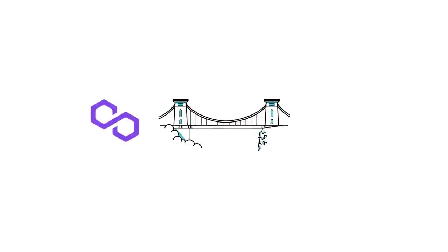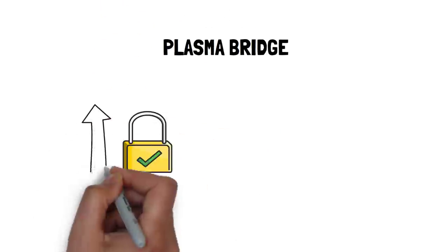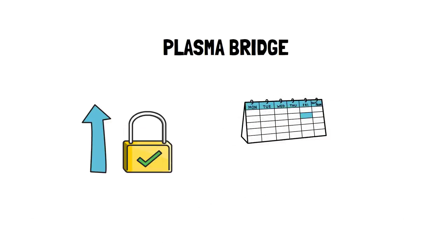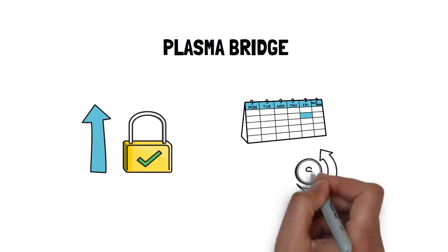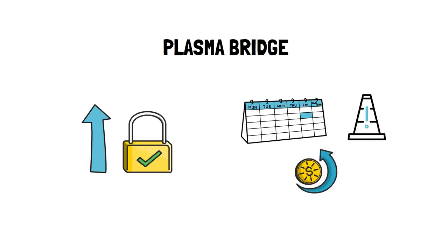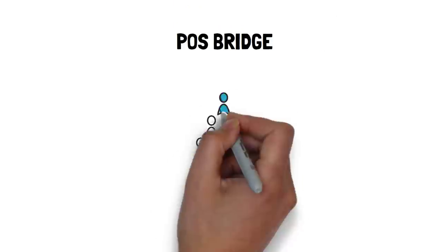Polygon provides two separate ways for moving assets between Ethereum and Polygon, Plasma bridge and the POS bridge. Plasma bridge provides increased security guarantees due to the plasma exit mechanism. However, there is a 7-day withdrawal period associated with all exits caused by certain restrictions in the plasma architecture.